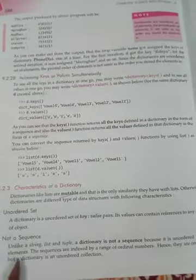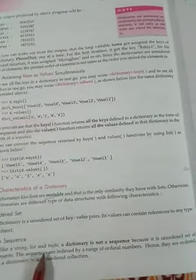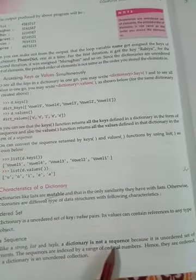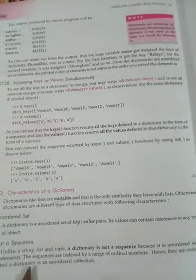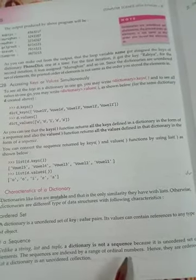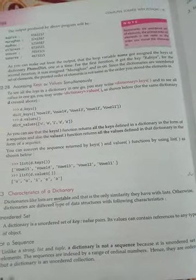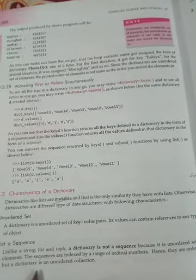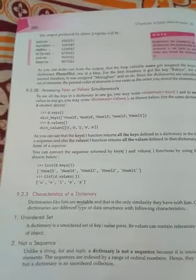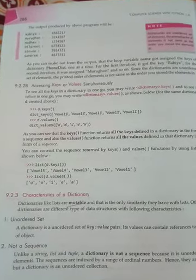Number two: unlike a string, list, and tuple, a dictionary is not a sequence, because it is an unordered set of elements. Sequences are indexed by a range of ordinal numbers, hence they are ordered. But a dictionary is an unordered collection — it is an unordered set of key-value pairs.